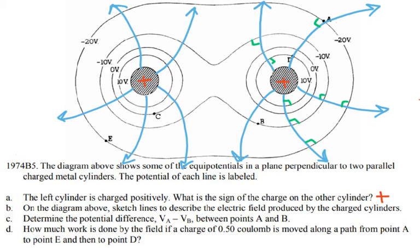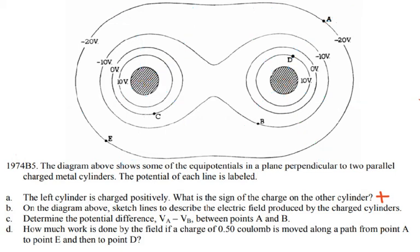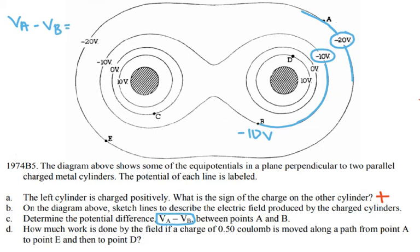For the next question, determine the potential difference between points A and B — that is, VA minus VB. The potential at point B is negative 10 volts because it lies on the negative 10 volt equipotential line. Point A lies on the negative 20 volt equipotential line. So VA minus VB equals negative 20 minus negative 10, which equals negative 10 volts.